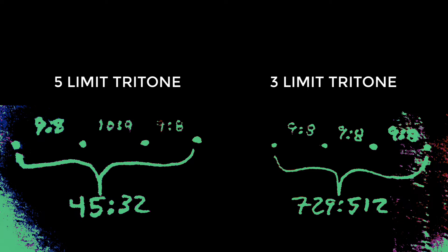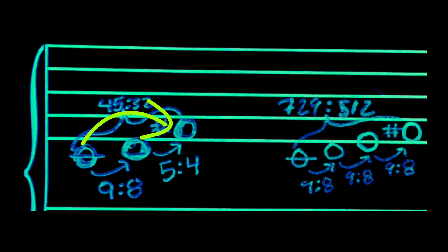There are also 3 limit and 5 limit tritones that are common. The Pythagorean 3 limit uses three 9 over 8 whole tones, while the 5 limit substitutes one of those for a 10 over 9. Thus, these two intervals are off by 81 over 80, the syntonic comma. So here's the 45 over 32, the 5 limit. You go up a whole tone, and then you go up a just major 3rd. And then we have our Pythagorean tritone created with three whole tones of 9 over 8.